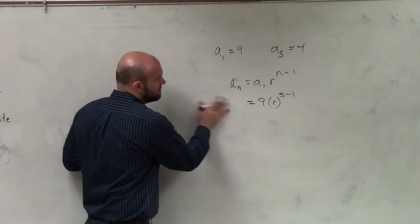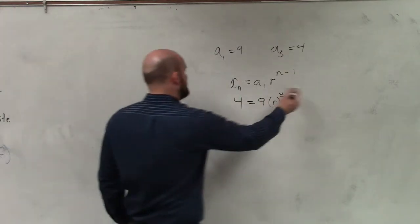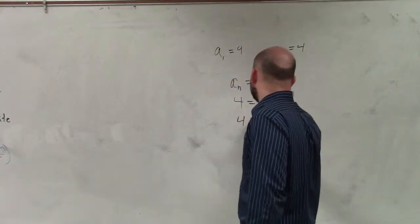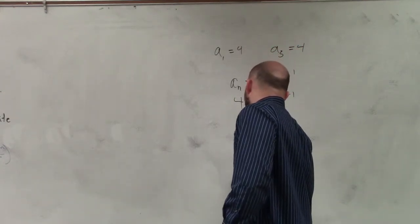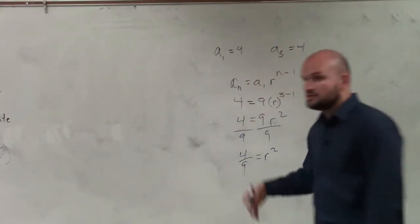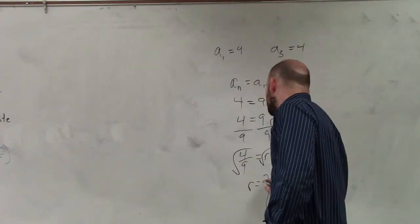a sub 3 is 4. So now let's solve for r. 3 minus 1 is 2, so I have 4 equals 9 times r squared. Divide by 9: 4 ninths equals r squared. To solve for r, I take the square root. r equals 2 thirds.